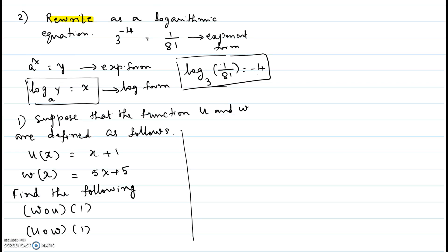Next, we will try problem number one. Suppose that the function u and w are defined as follows: u of x equal to x plus 1, w of x equal to 5x plus 5.